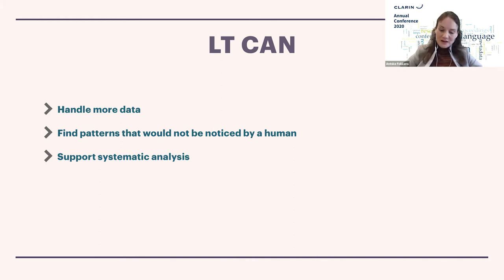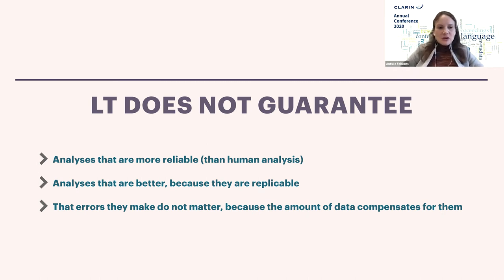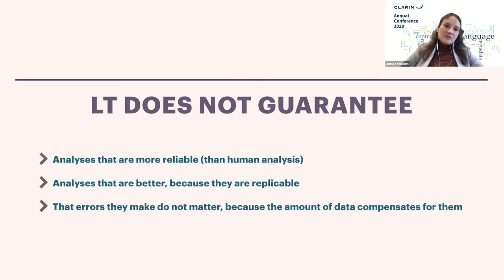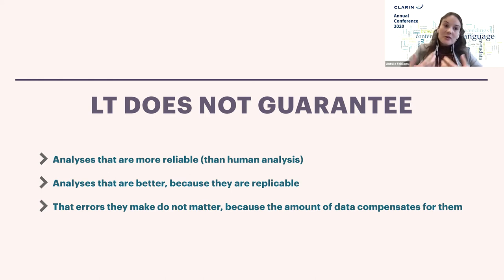There are also a couple of things that language technology does not guarantee, even though people very often believe it does. Language technology does not guarantee that analyses are more reliable than human analysis. It does not guarantee that analyses are better because they're replicable. And you cannot be certain that the errors our tools make don't matter because the amount of data compensates for them. These three claims are ones I've heard from social sciences and humanities, but also sometimes from computational linguists selling their tools.